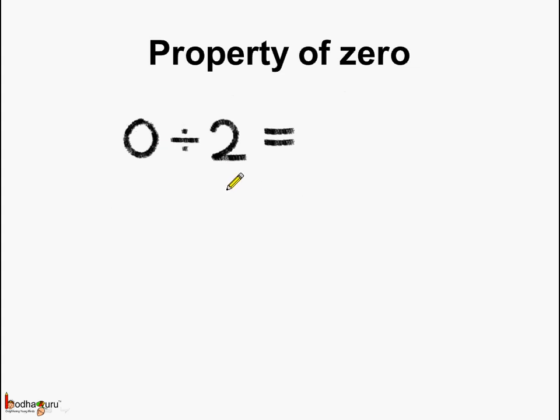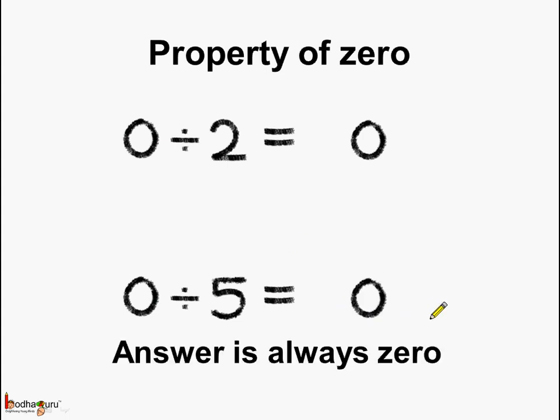So 0 divided by 2 is equal to 0, and 0 divided by 5 is also equal to 0. The answer is always 0.